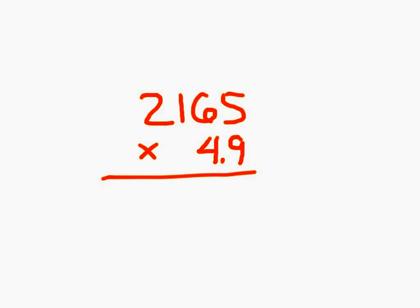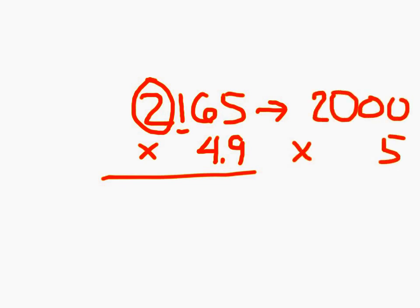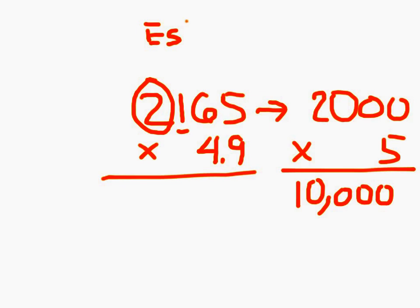For this here, 2,165, greatest place is the thousands place. So, 2,165 goes to 2,000. 4 and 9 tenths goes to 5. And 2,000 times 5 is 10,000. And that's how we estimate to the greatest place. And we're still figuring out estimated products.